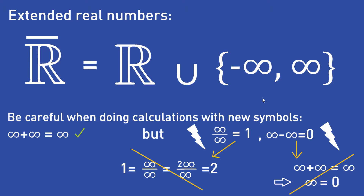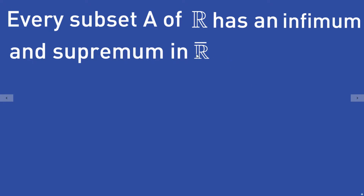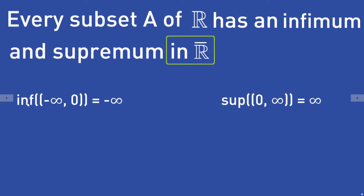Now let's take a look at what changes when we consider the extended real numbers instead of the normal real numbers. In the extended real numbers, every subset A of the real numbers has an infimum and supremum, which is quite nice. For example, the infimum of the open interval (−∞, 0) is minus infinity, and minus infinity is a number in the extended real numbers. The supremum of the open interval (0, ∞) is infinity, and infinity is an element of the extended real numbers.